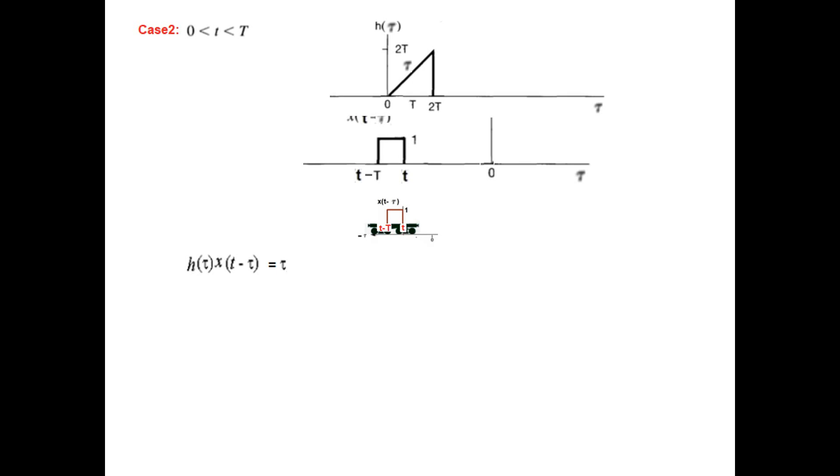Now case 2, we have pulled it slightly. Now T is between 0 and capital T. So case number 2, T is between 0 and capital T. You have to look at this T, the trolley T. It is between 0 and capital T. So that is our first case, and we have some overlap. Here is the overlap.